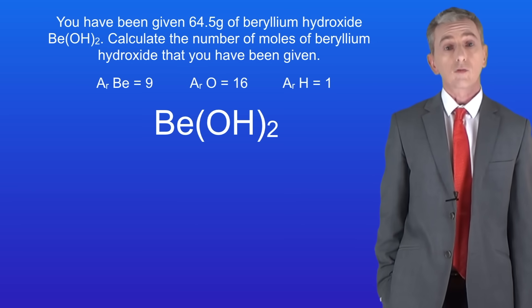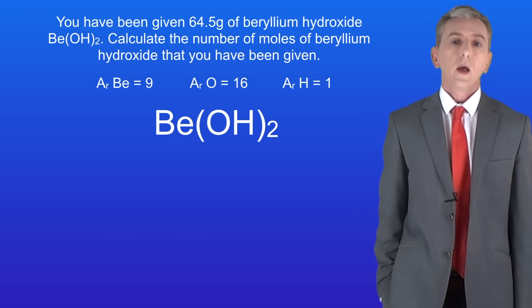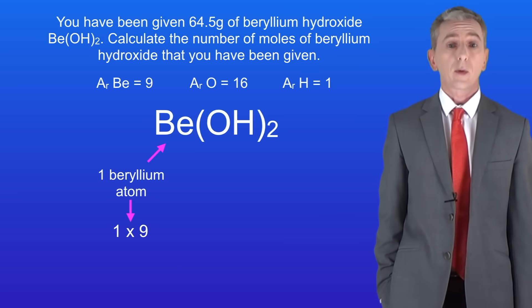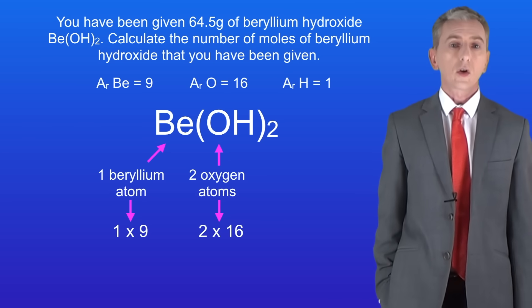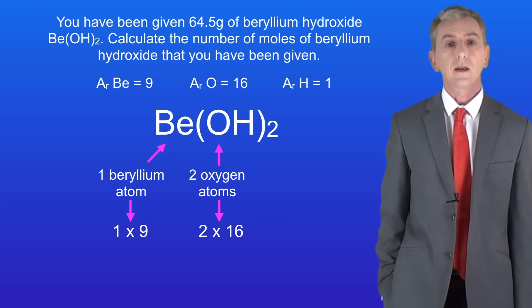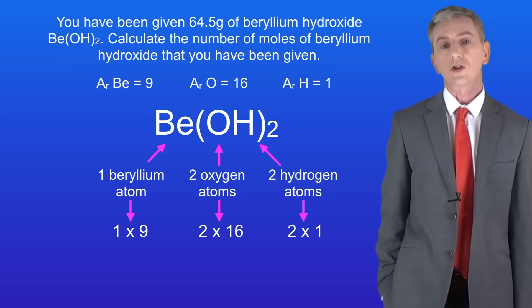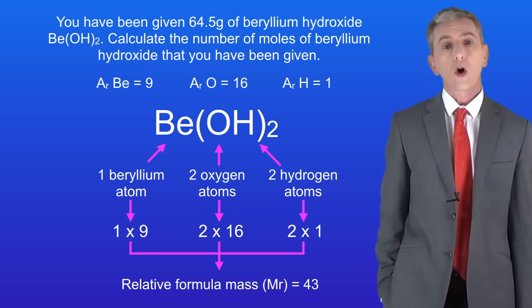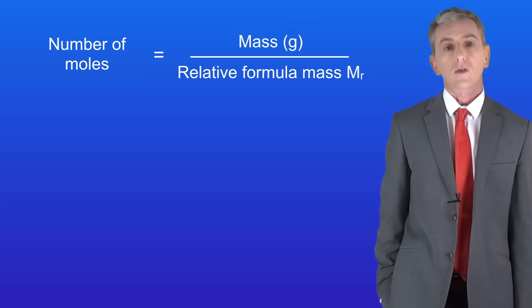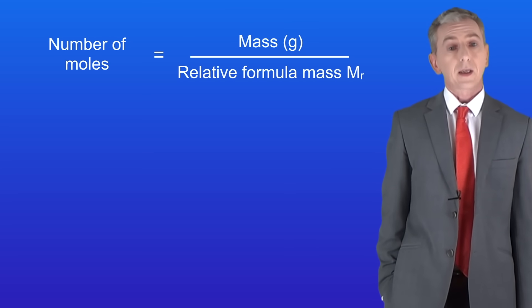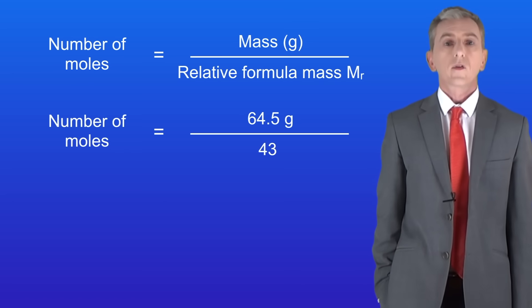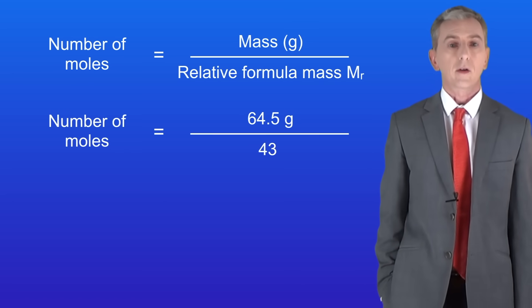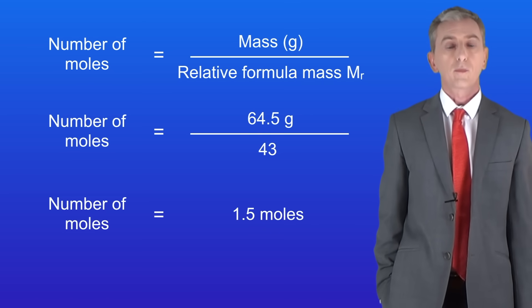We start by calculating the relative formula mass for beryllium hydroxide. We've got one atom of beryllium with a relative atomic mass of 9, two atoms of oxygen with a relative atomic mass of 16 each, and two atoms of hydrogen with a relative atomic mass of 1 each. Adding all of these together gives a relative formula mass of 43. Dividing 64.5 grams by 43 means that we have 1.5 moles of beryllium hydroxide.